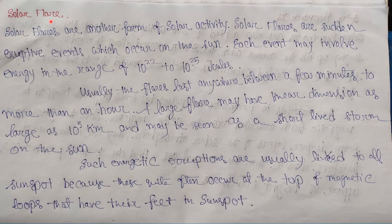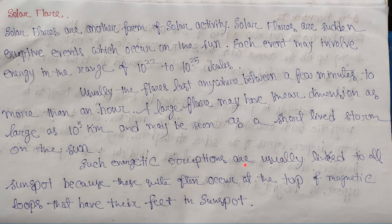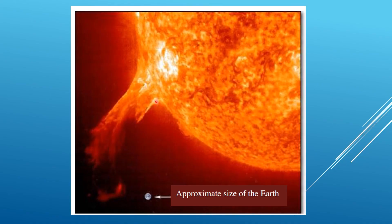Now let's discuss what is a solar flare. Just like other solar activities, solar flares are another form of solar activity. Solar flares are certain eruptive events which occur on the sun, and each event may involve energy in the range of 10^22 to 10^25 joules — a tremendous amount of energy. Usually the flares last anywhere between a few minutes to more than one hour. A large flare may have a linear dimension as large as 10^5 kilometers and may be seen as a short-lived storm on the sun. Such energetic eruptions are usually linked to sunspots, because these events occur at the top of magnetic loops whose feet are rooted in sunspot regions — that is, solar flares occur at regions with a higher density of sunspots. Here you can see a photograph of a solar flare, with the approximate size of Earth shown for comparison.